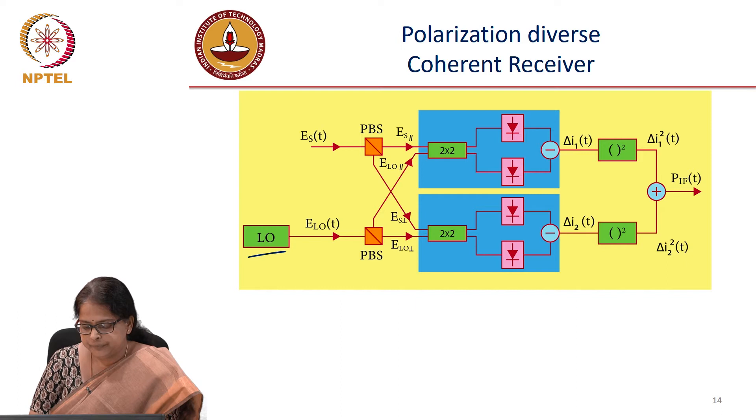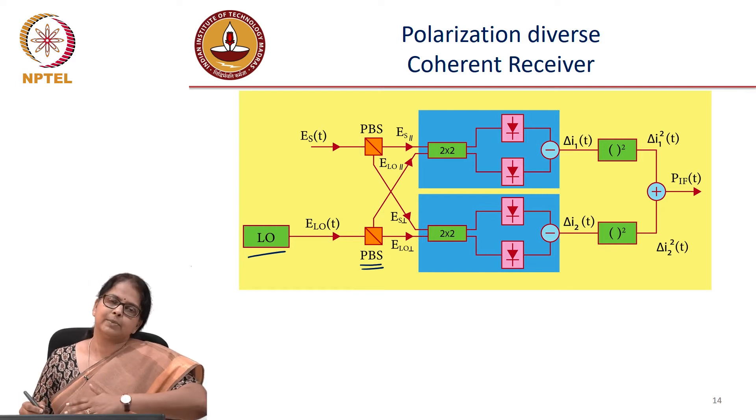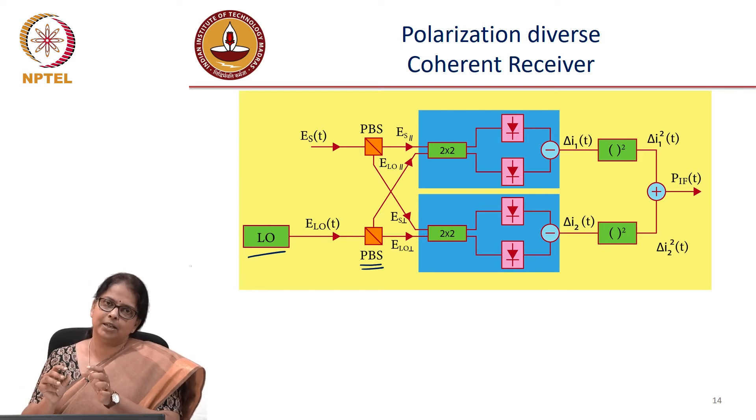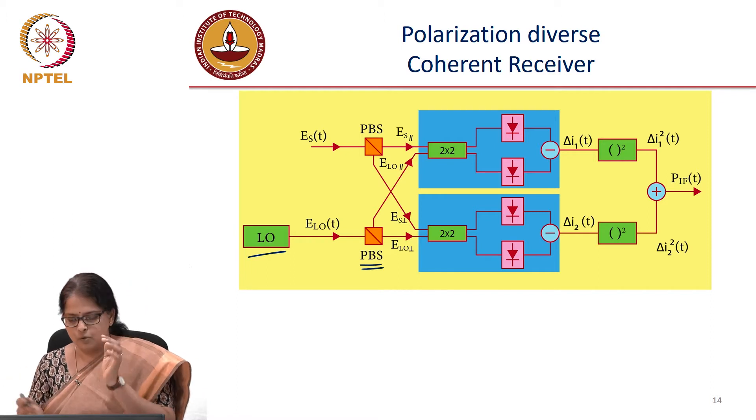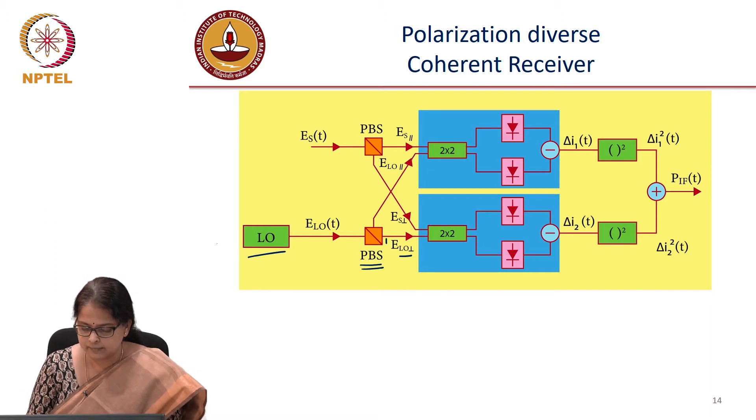You take your local oscillator, split the output of the local oscillator with a polarization beam splitter. And polarization beam splitter is a device which is made with two birefringent materials such that the two outputs are of two orthogonal polarizations. So you have this perpendicular path and this parallel path, perpendicular polarization and parallel polarization.